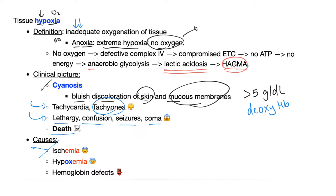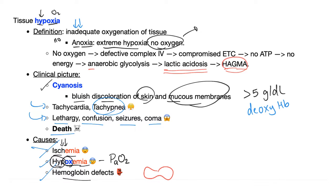Causes of hypoxia: ischemia, hypoxemia, and hemoglobin defects. Ischemia means decrease or deficient or dysfunctional blood flow. Hypoxemia — emia means blood, oxy means oxygen, hypo means less — so less oxygen in the blood. By definition, hypoxemia is low PaO2. Hemoglobin defects matter because hemoglobin on the red blood cells is the thing that carries oxygen — specifically four molecules of oxygen.